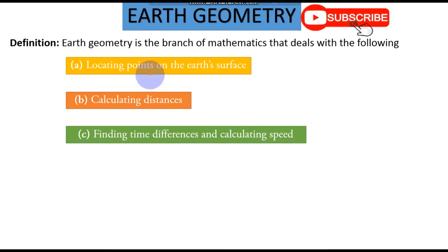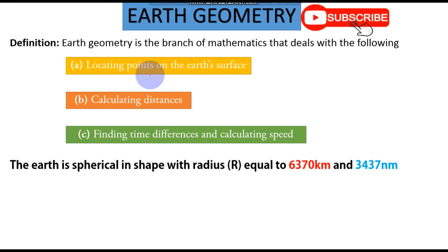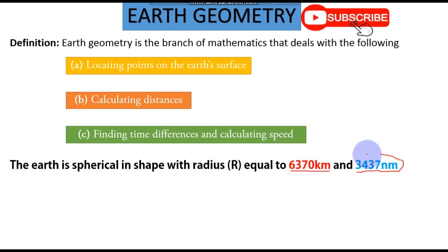The earth is in spherical form, so the radius of the earth in kilometers is 6,370 kilometers. In nautical miles that is 3,437 nautical miles. Keep these radii in mind: when you are asked to find distance in nautical miles, remember the radius in nautical miles; if finding distance in kilometers, remember the radius in kilometers.